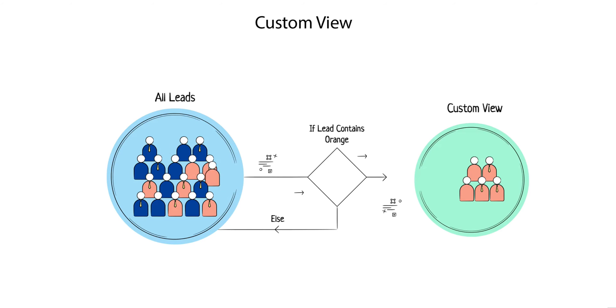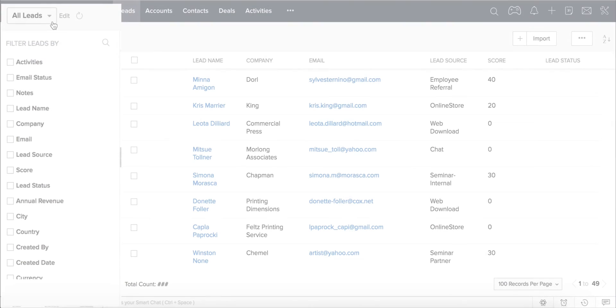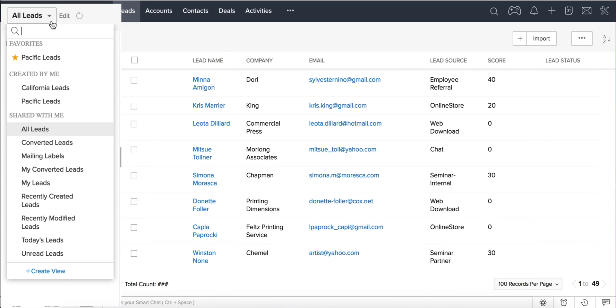Another way to group your leads and prioritize them is by creating custom views. While Smart Filters are user-specific, custom views can be created for your organization, a role, or groups. Let us assume that you want to group leads based on the source, industry, or from a particular country. To create custom views, click on the module drop-down and when you hit the custom view drop-down menu you will see some of the predefined custom views.